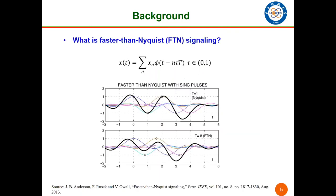So what is FTN signaling? The transmitted signal of FTN signaling can be represented as this form, where X_n is the symbol, and phi_T is the shaped filter. T is the orthogonal symbol interval of the shaped pulse, and tau in 0 to 1 is the acceleration factor.